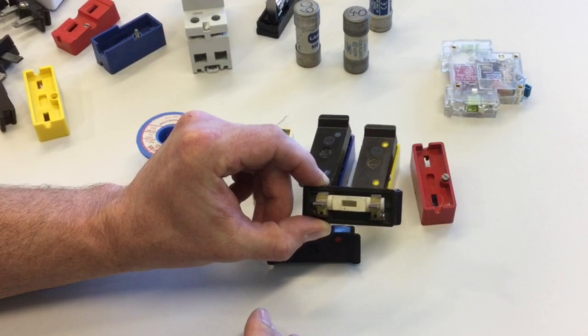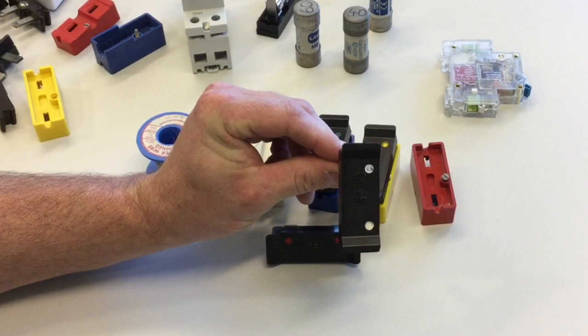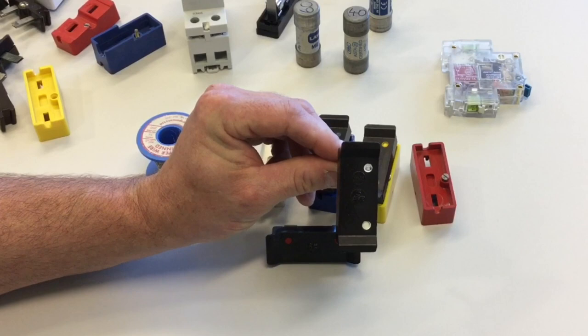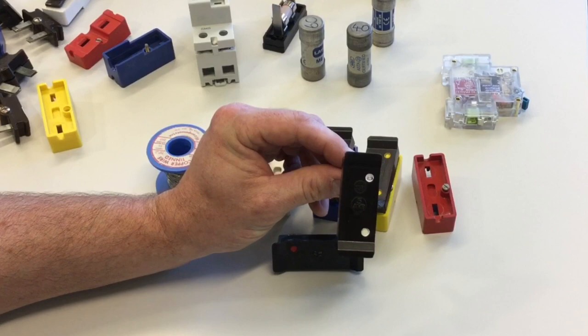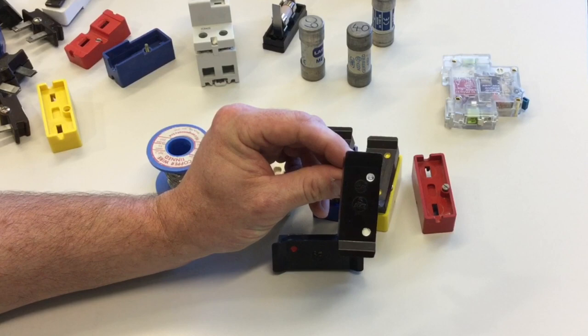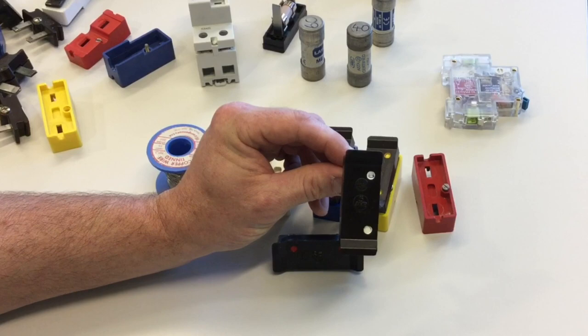They have fusing factors, all the devices we're going to look at. And the fusing factor for rewireable fuses is 2. That means it will take twice the current, in this case 10 amps, to cause operation of the device. Because of this poor fusing factor, when we're designing circuits protected by a rewireable fuse, we must take into consideration a correction factor of 0.725.